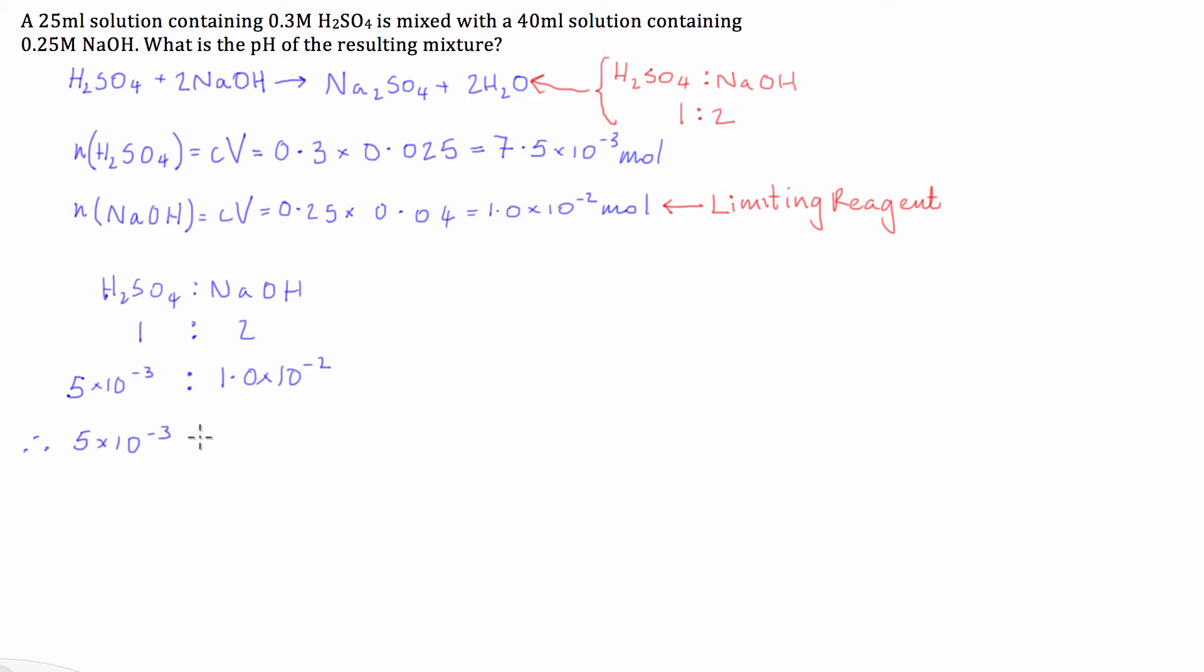So therefore moles of H2SO4 will be, so if we have that many moles of H2SO4 neutralised we will have this, the total amount of moles subtract this remaining so we can also write therefore 2.5 times 10 to the negative 3 moles of H2SO4 remain.